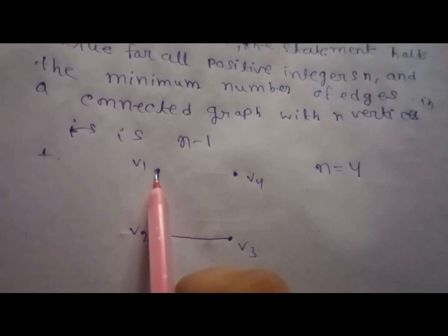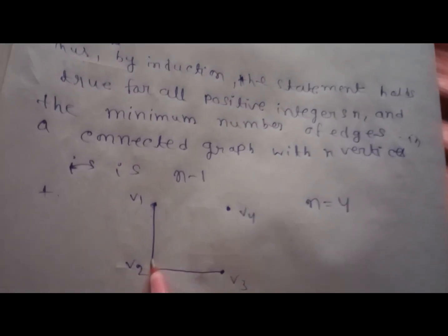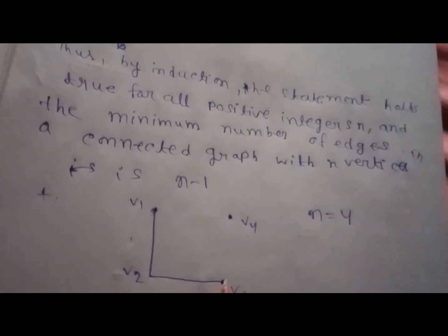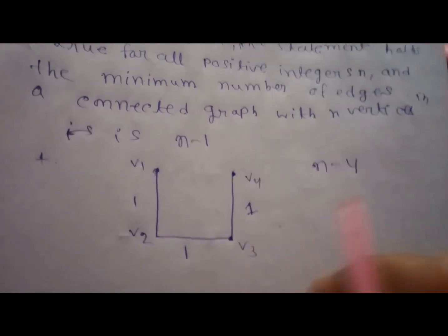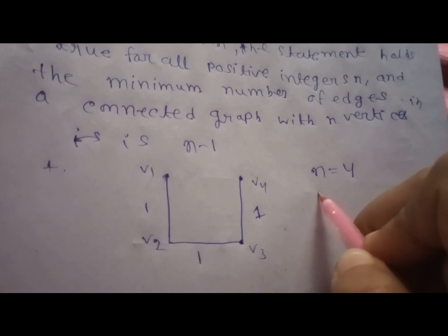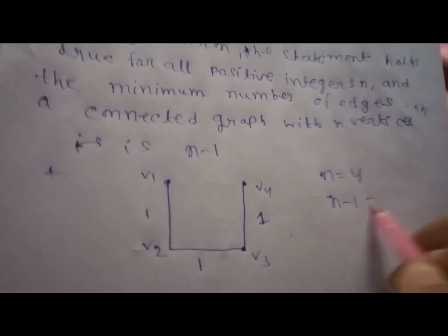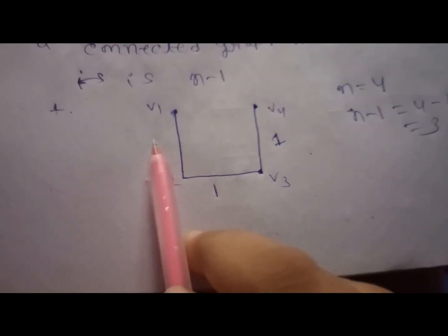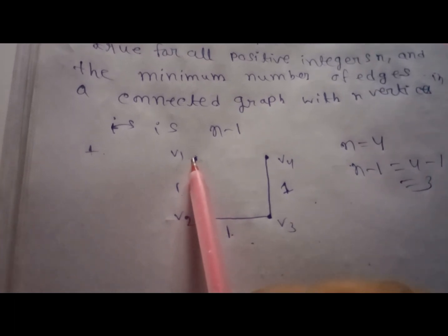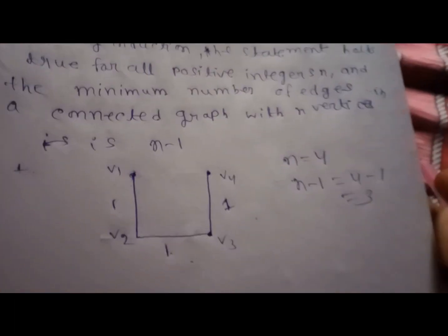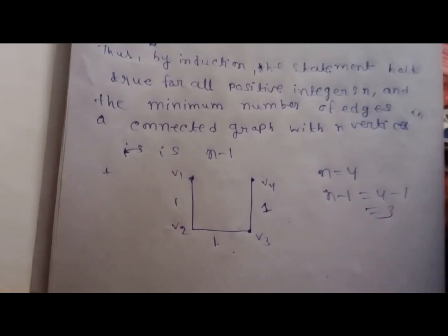The minimum number of edges required to connect all vertices is 3: v1 to v2 is one edge, v2 to v3 is one edge, and v3 to v4 is one edge. So n minus 1 equals 4 minus 1 equals 3, and all vertices v1, v2, v3, and v4 are connected. Thank you for watching — subscribe to our YouTube channel, Easy Learn Academy.